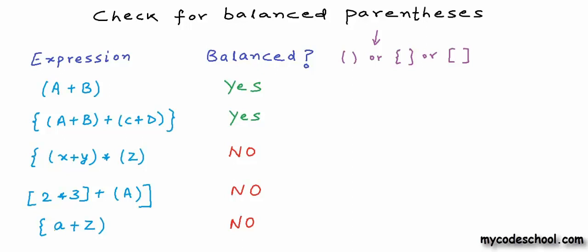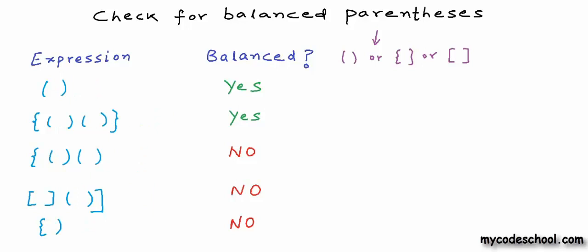This problem is sometimes better stated like this: given a string comprising only of opening and closing characters of parenthesis, braces, or brackets, we want to check for balancing. Only these characters and their order is important. While parsing a real expression we can simply ignore other characters.